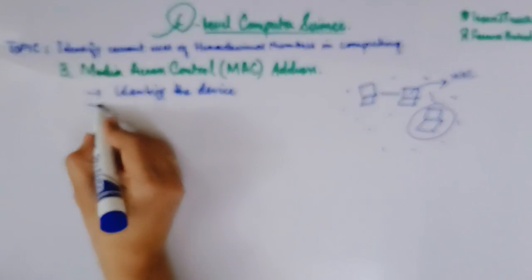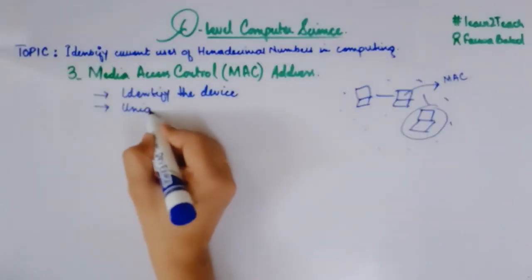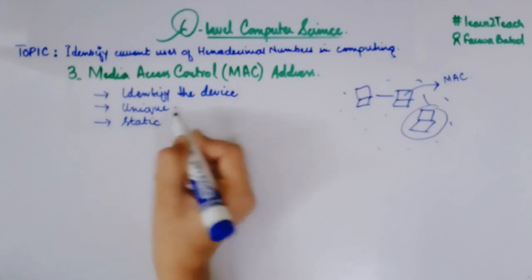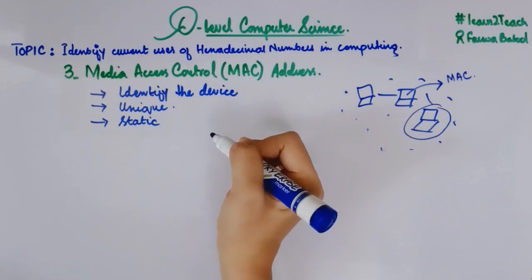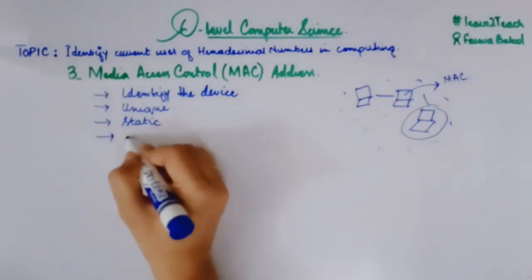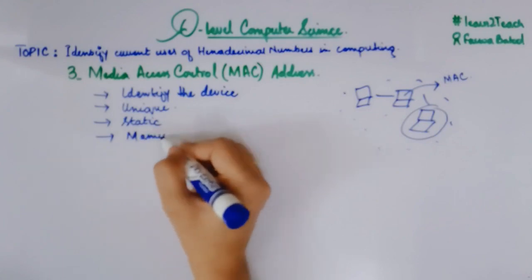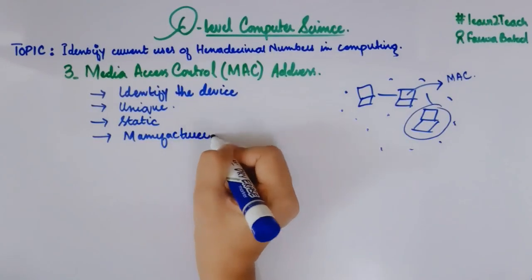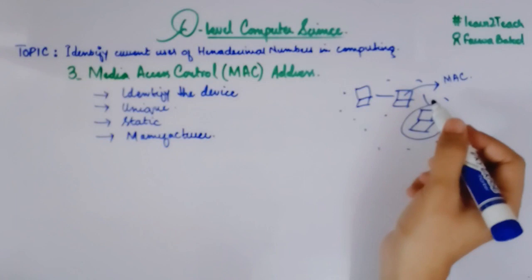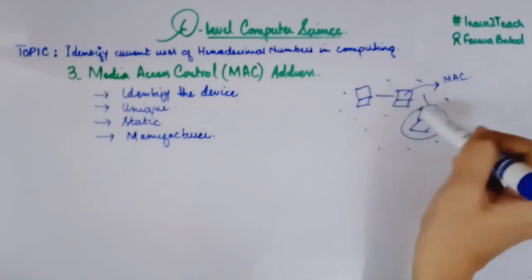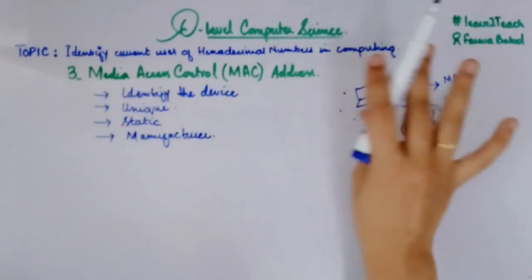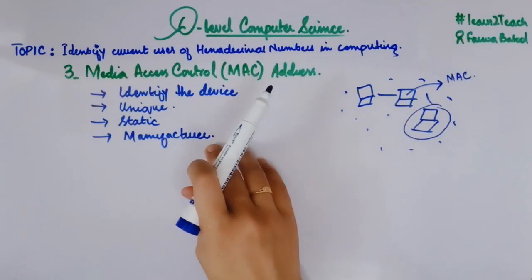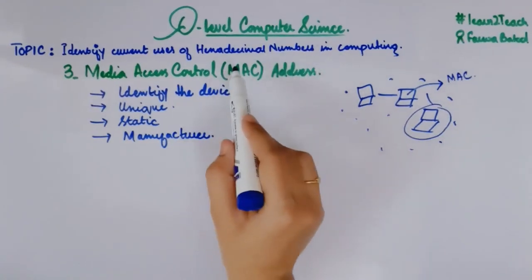Every device, every computer machine, has a MAC address that is unique. It must be unique and it is also static — meaning it is unchangeable. You cannot change the MAC address. It is defined by the manufacturer, the one who creates the machine, and it will not belong to any other existing device.